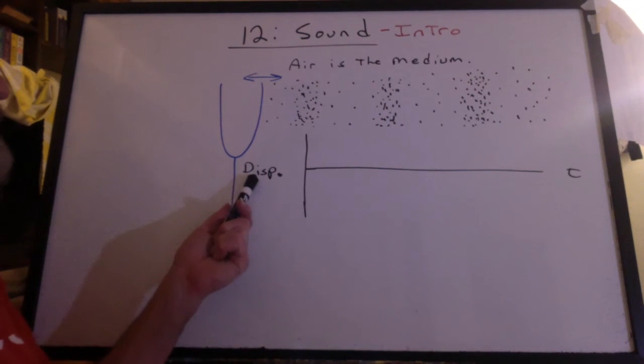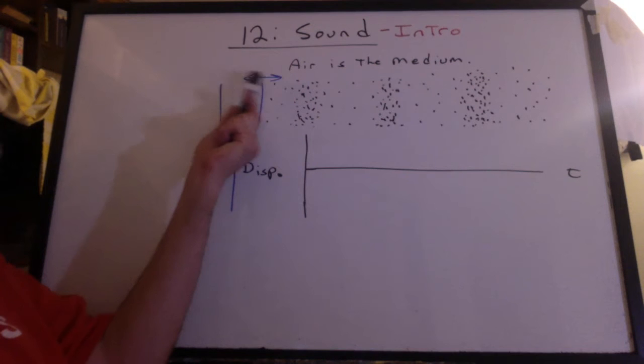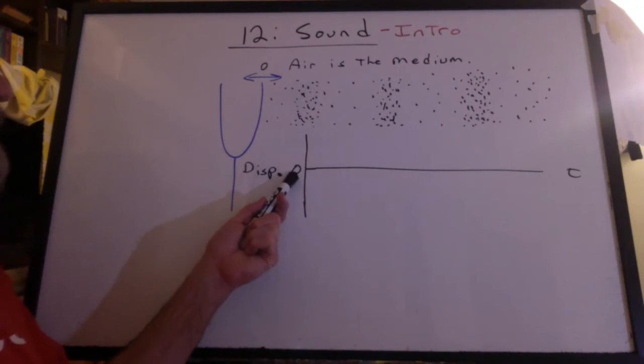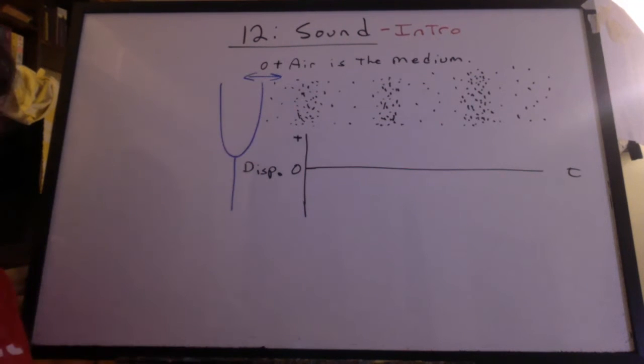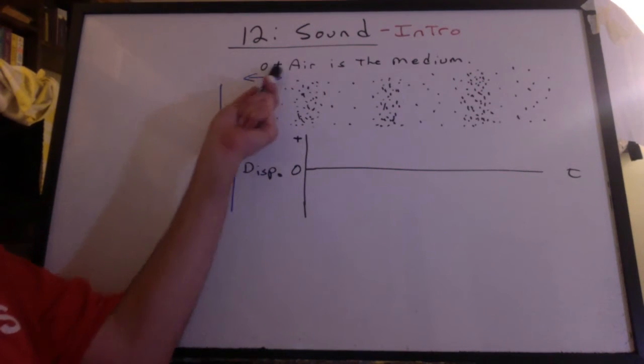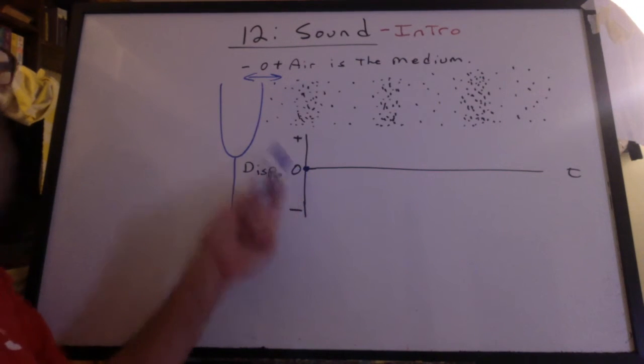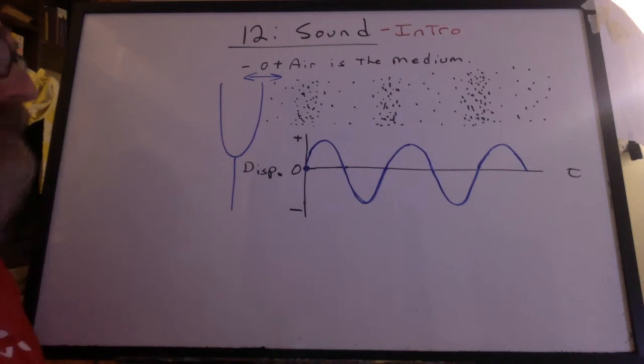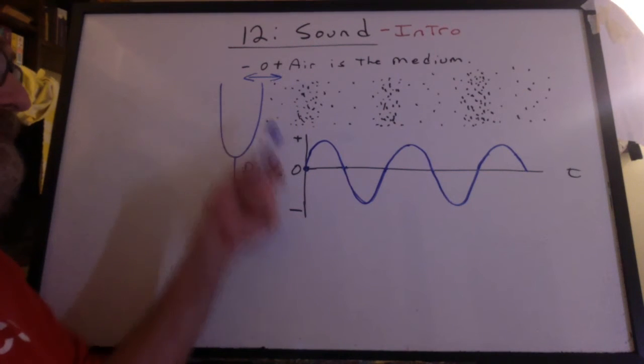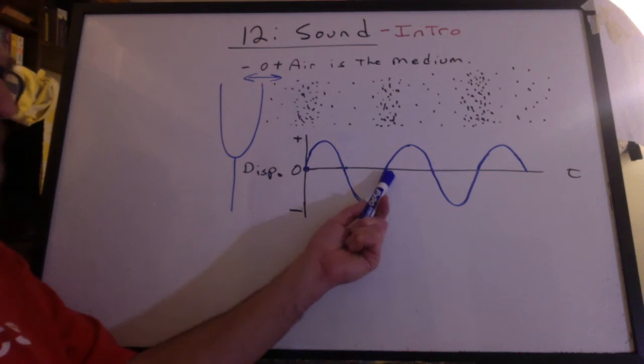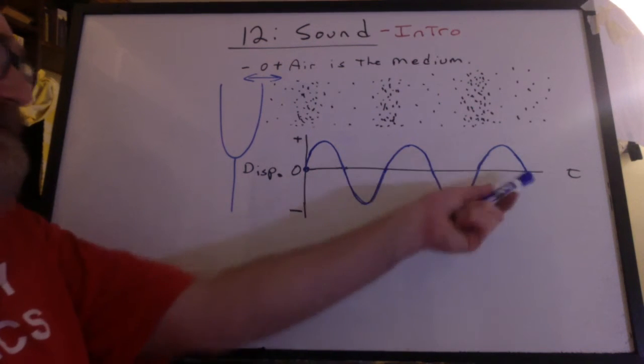We're going to make a graph of displacement of the tip of the tuning fork versus time. This is the equilibrium position. This will be all the way forward. This will be all the way back. We're going to start at the equilibrium position going forward. It's simple harmonic motion. We go forward, back to the equilibrium, all the way back, back to the equilibrium, and it's just a sine curve.